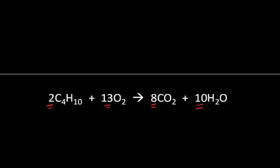These coefficients can be interpreted as individuals, two molecules of butane, or two moles of butane. The same is true for each of the stoichiometric coefficients. The important thing is that these stoichiometric coefficients tell us the ratio in which these different reactants react with one another, and the ratio of the reactants to the products.